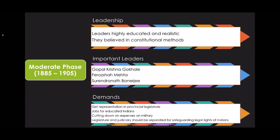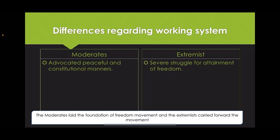The demands of the moderates included representation in provincial legislature, jobs for educated Indians, cutting down on military expenses, and separation of legislature and judiciary for safeguarding the legal rights of Indians. The difference between moderates and extremists was in their working methods. Moderates advocated peaceful and constitutional manners, while extremists advocated severe struggle for attainment of freedom. However, the moderates laid the foundation of the freedom movement and the extremists carried it forward.